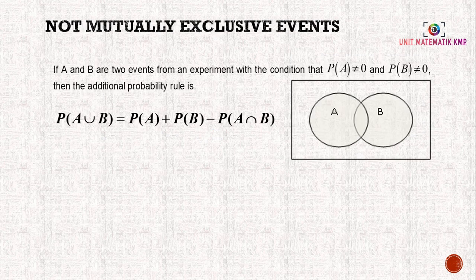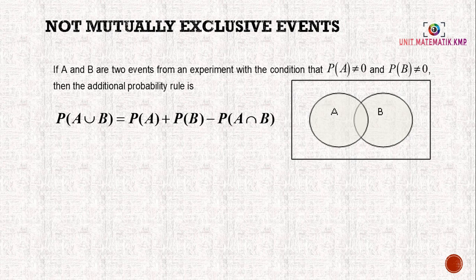For not mutually exclusive events, there will be an intersection. If A and B are two events from an experiment with the condition that P(A) ≠ 0 and P(B) ≠ 0, then the additional probability rule is P(A ∪ B) = P(A) + P(B) - P(A ∩ B).